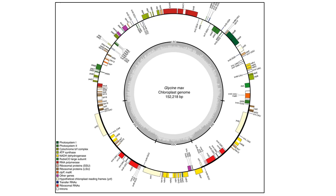You will also see the circular map presentation of the chloroplast genome showing the encoded genes. The green genes are implicated in photosystem I, the red in ribosomal RNA, and the yellow are implicated in the NDH complex. The presentation also shows the large and small single-copy regions and the inverted repeat regions.